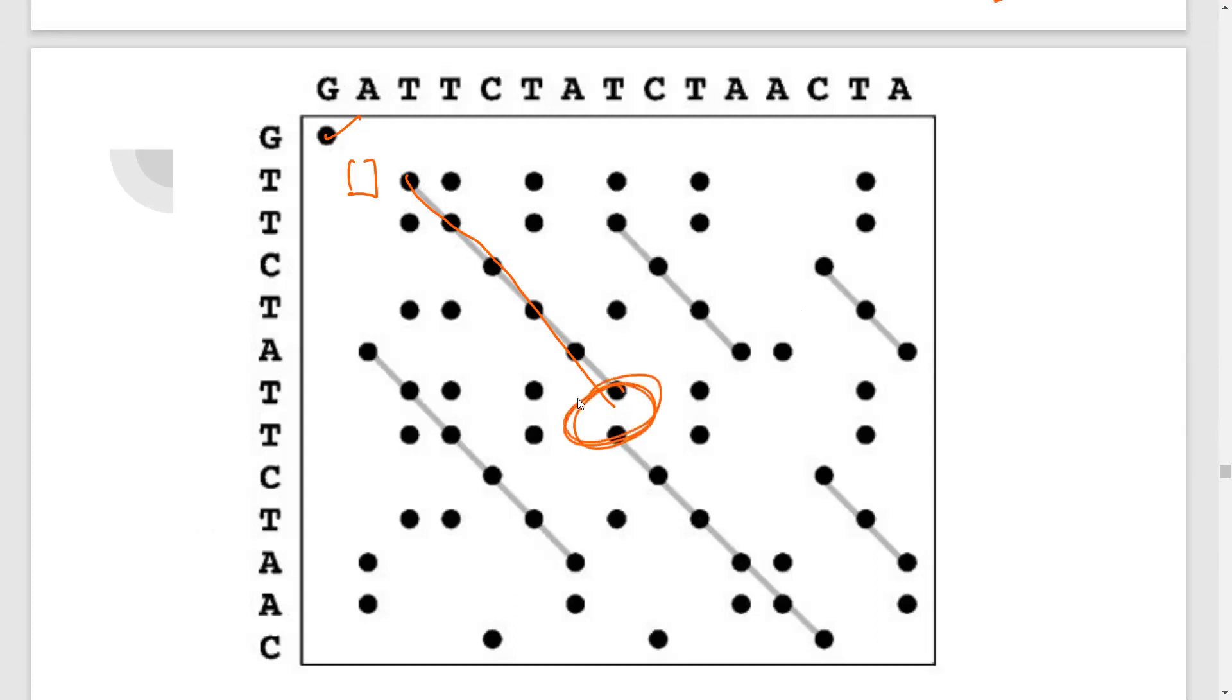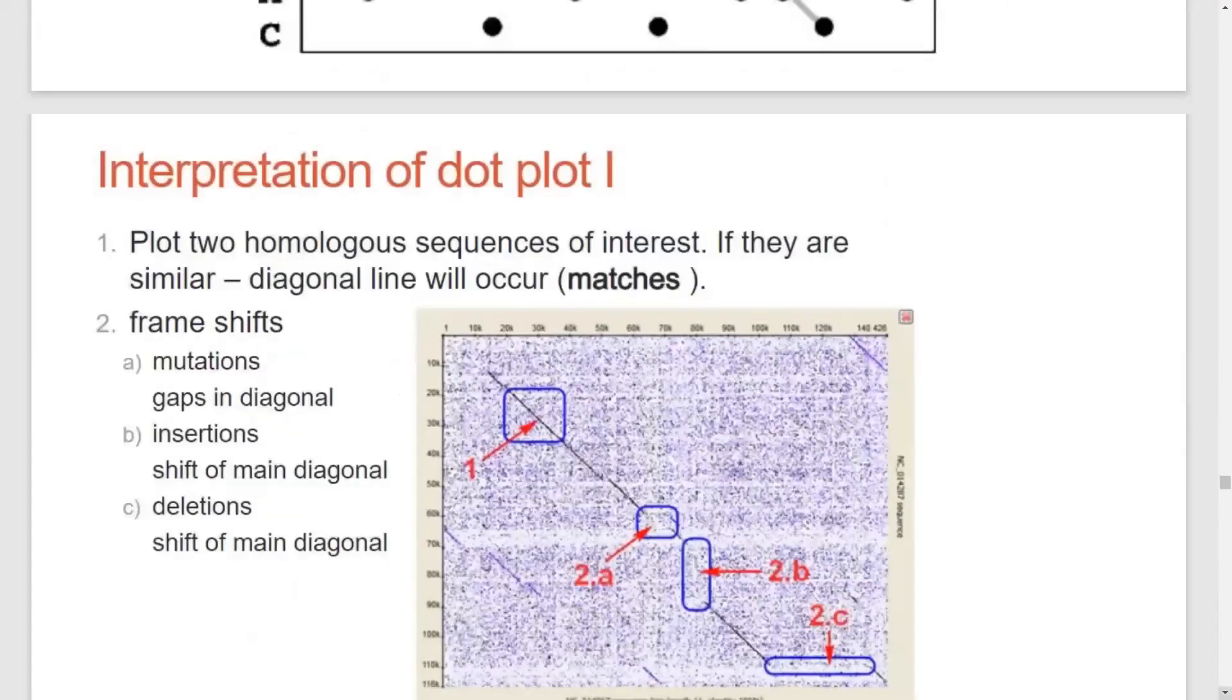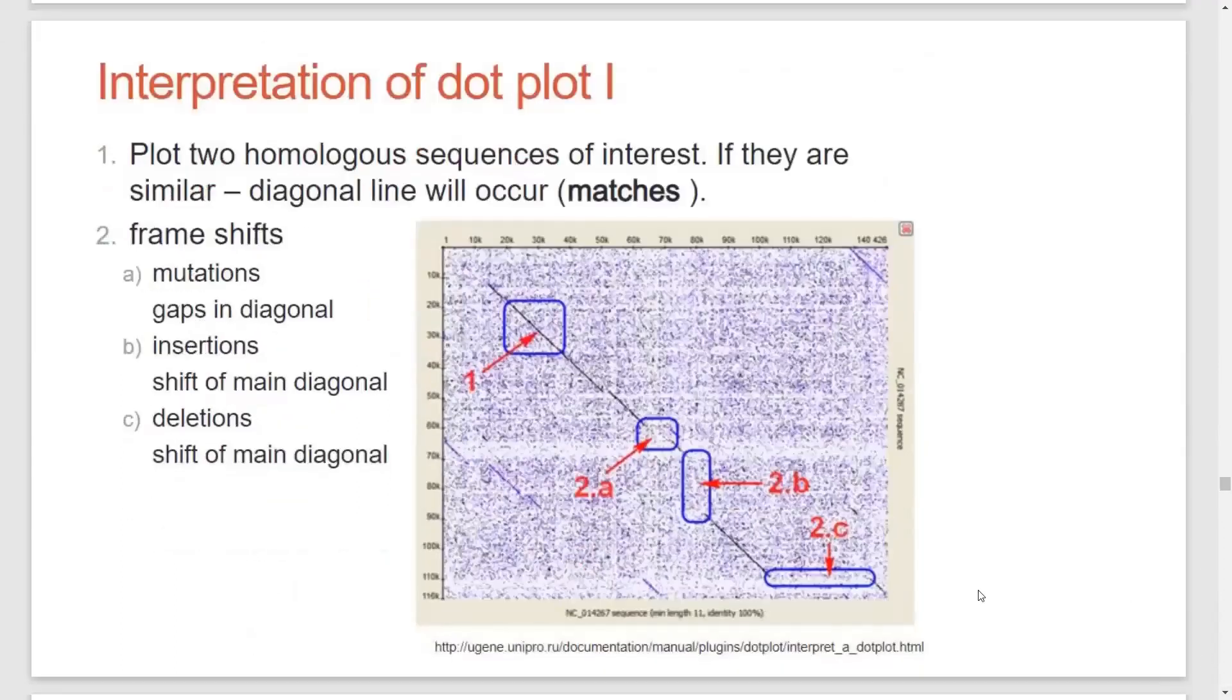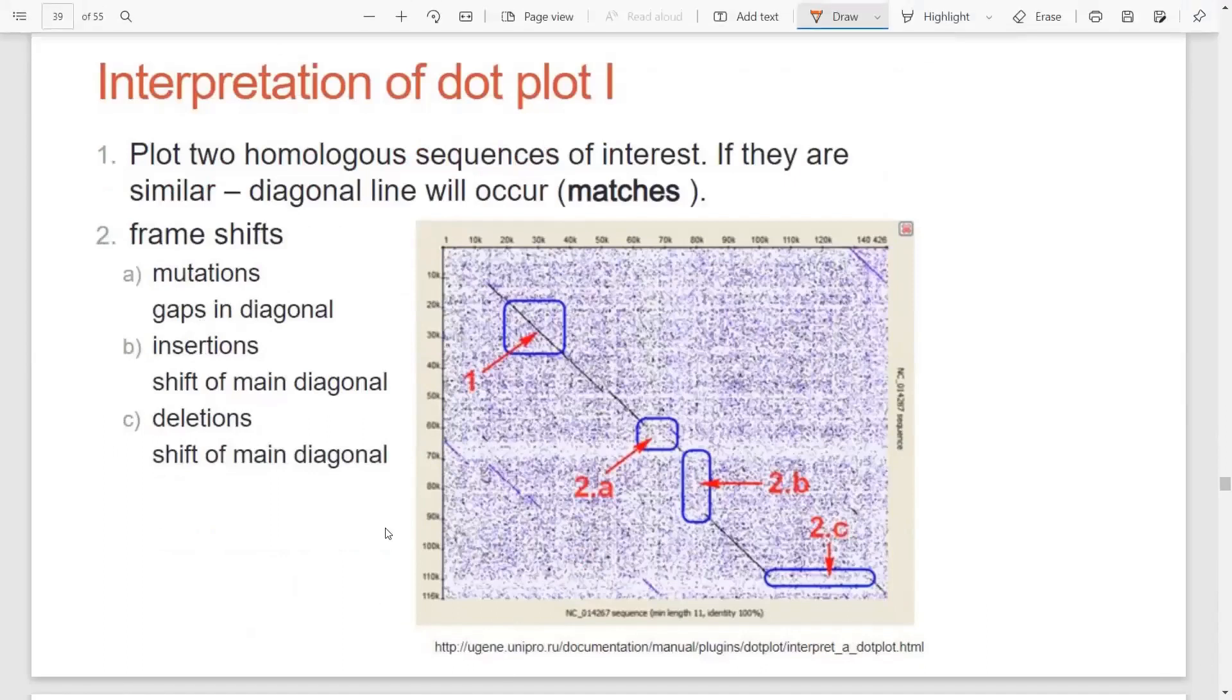Now, sometimes here, as you observe, there is a gap, then that is considered as an insertion or deletion. This is a very beautiful interpretation. I have taken it from this website. You can definitely go and check out. So now, if you have the diagonal straight line, that is in case number one, it is for a match, right? But if you have gaps, like it is shown in 2A, that represents a type of mutation.